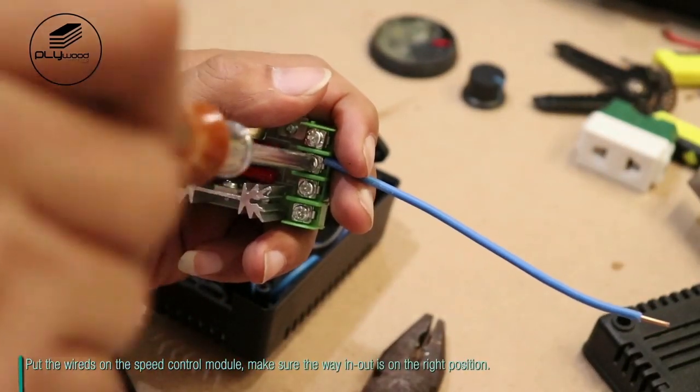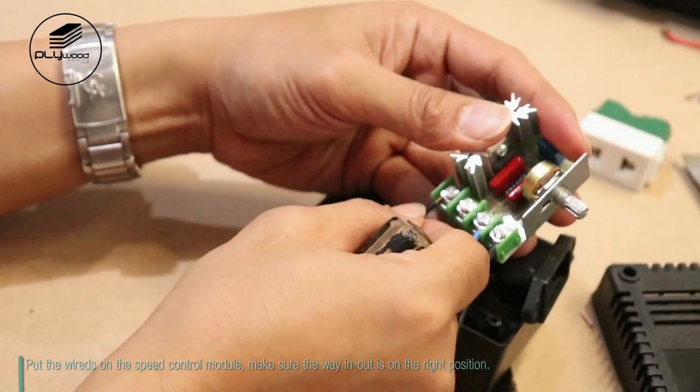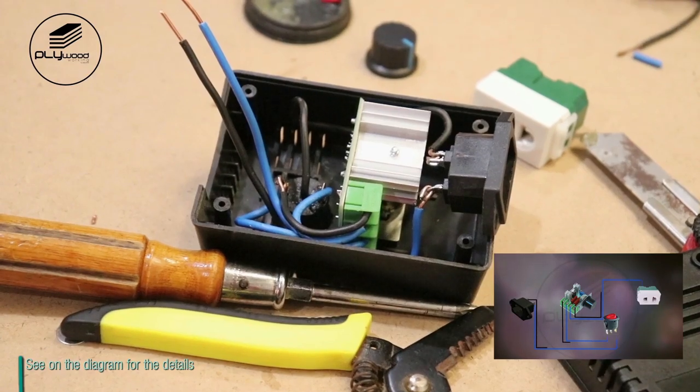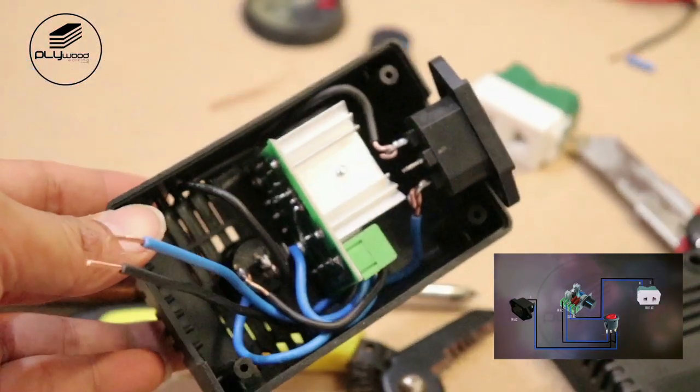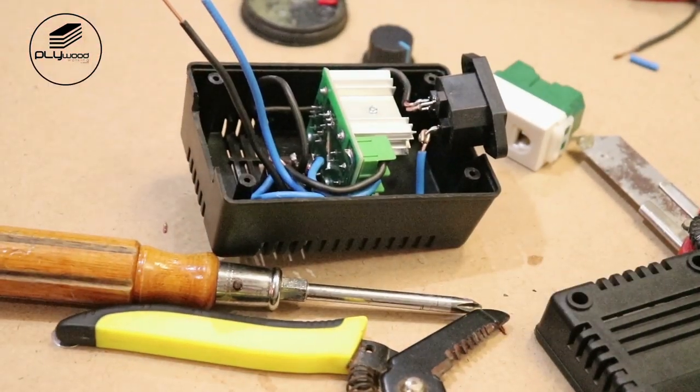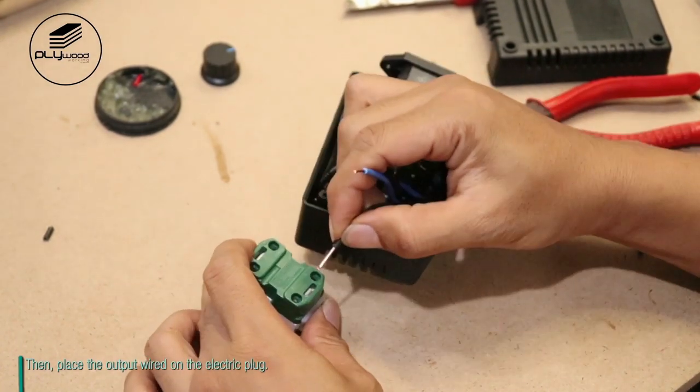Put the wires on the speed control module. Make sure the way in and out is in the right position. Then place the output wires on the electric plug.